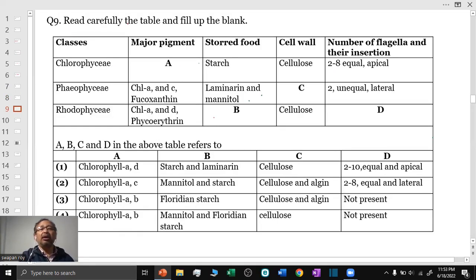Question number 9: Read carefully the table and fill up the blanks. Here, the major classes of algae have been given with their major pigment, stored food material, cell wall, number of flagella and their insertion with some of the points missing. So, we have to find out from the options to correctly fill up A, B, C, D, the missing words.